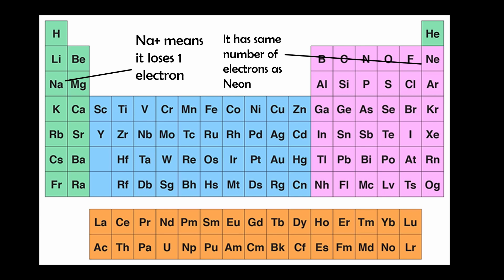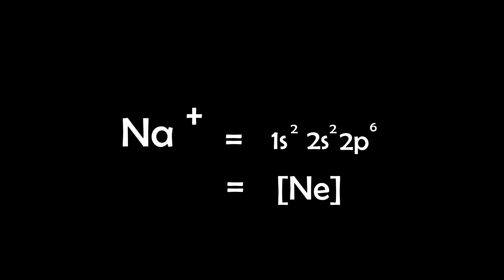So consequently, the electron configuration reverts to that of the noble gas configuration of neon. Therefore, the electron configuration for sodium plus is 1s2, 2s2, 2p6, or just neon.